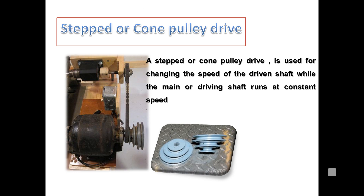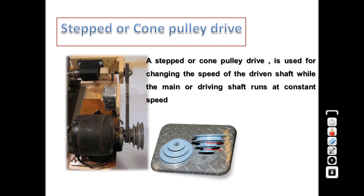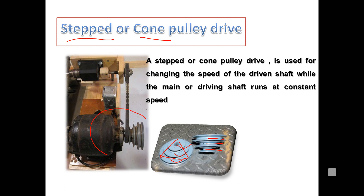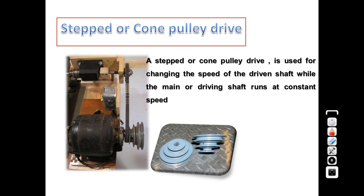A very common pulley arrangement is called a step pulley or cone pulley. In the diagram, you can observe a number of steps provided on the pulley — first, second, and third steps — hence the name step pulley. Its shape is conical, so it may also be called a cone pulley. Step cone pulley drives are used for changing the speed of the driven shaft while keeping the motor or input shaft running at constant speed, allowing different output speeds from a single motor.